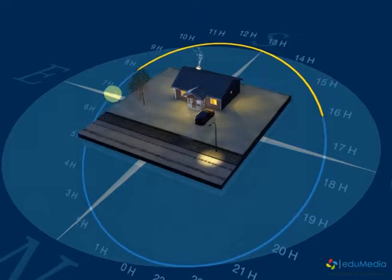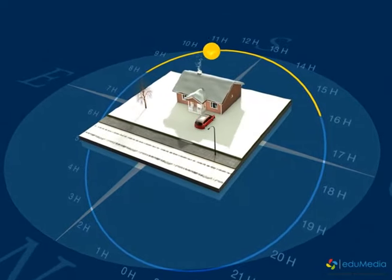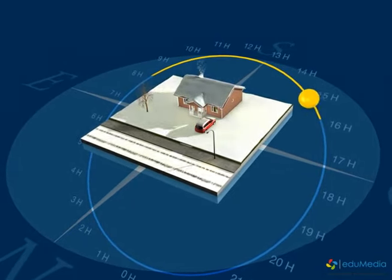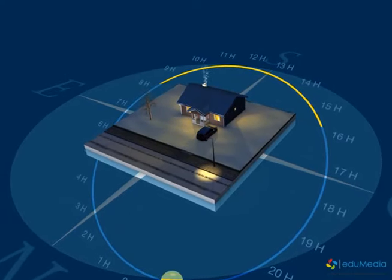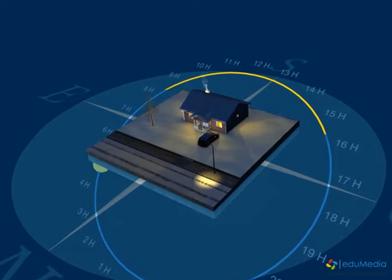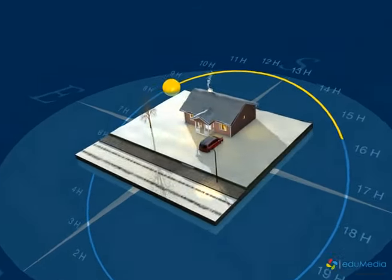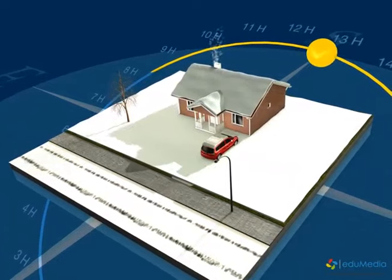At the winter solstice the Sun rises in the southeast, climbs to its lowest peak point of the year, and sets in the southwest. This is the shortest day of the year. It lasts only eight hours. The lengths of shadows are at their maximum.